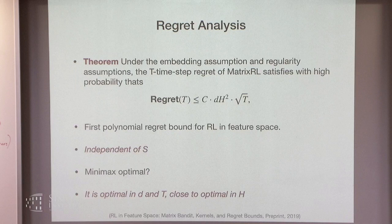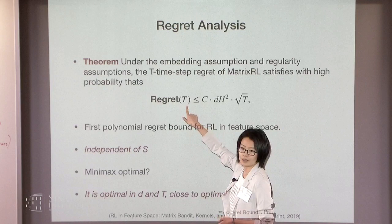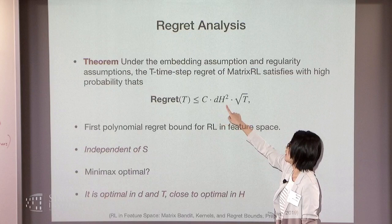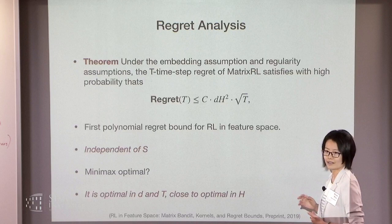Under these conditions, one can show a regret bound. The regret for this algorithm, in terms of time steps, is: dimension of feature space, H quadratic, and square root of T. We believe this is the first regret bound for reinforcement learning that is polynomial in feature dimension and in horizon H, and it is independent of S, the state space size.